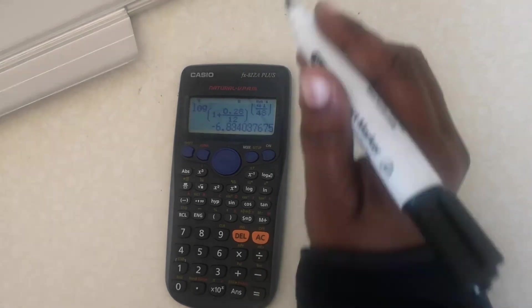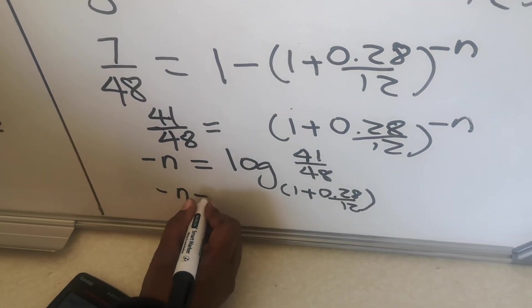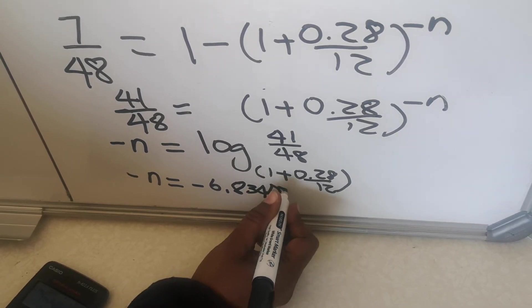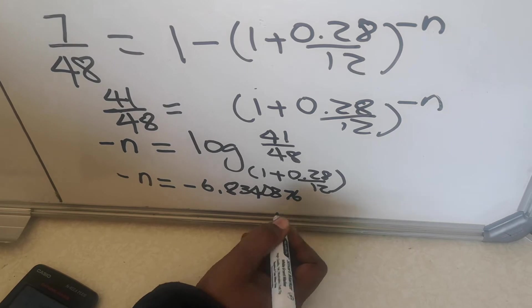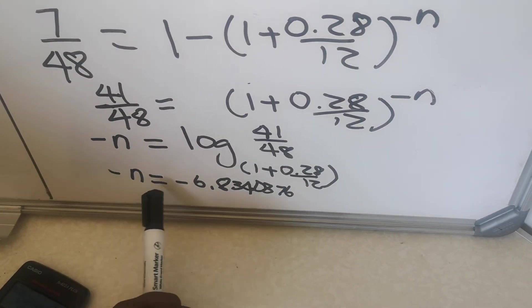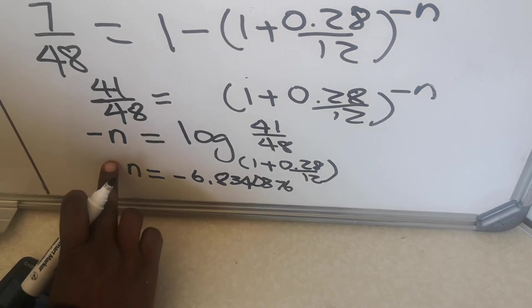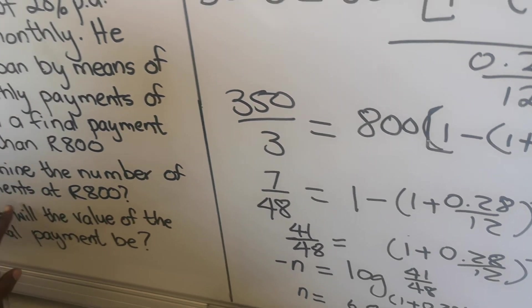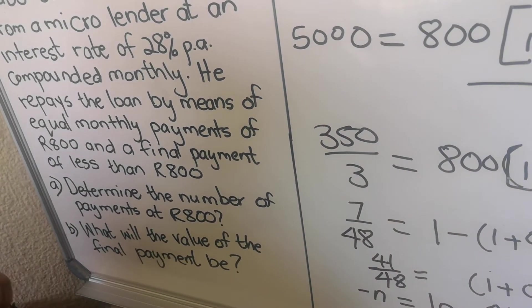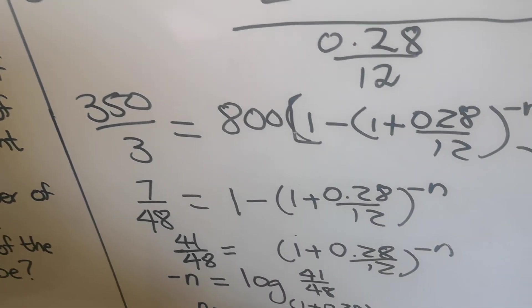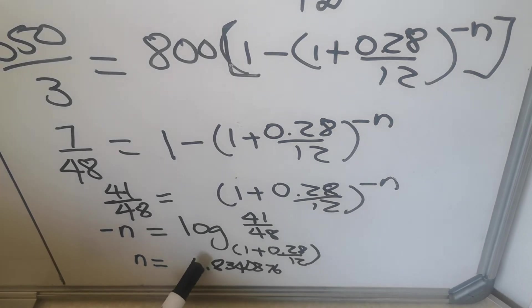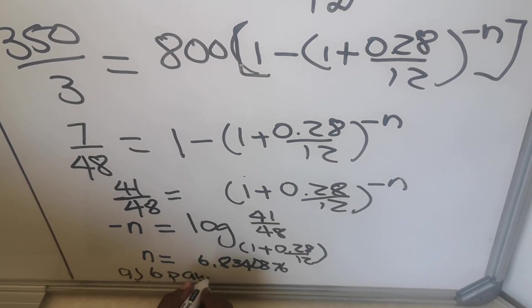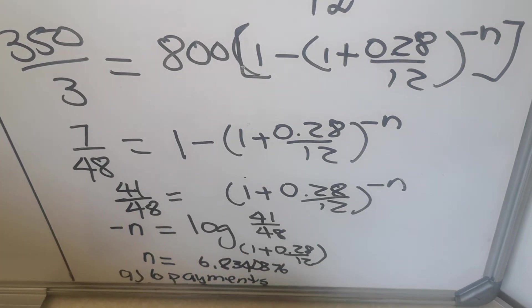And then I have a minus n. In my calculator I have negative 6.834037... Don't round it off. And then you see you have a negative n and a negative n. You multiply both sides with a negative, they become positive. The negative is going to go away. Now let's look at the question. The question says determine the number of payments at R800. How many payments would have paid R800? You would have paid 6 payments of R800. The whole number tells you the number of payments of the full amount. So your answer will be 6 payments.